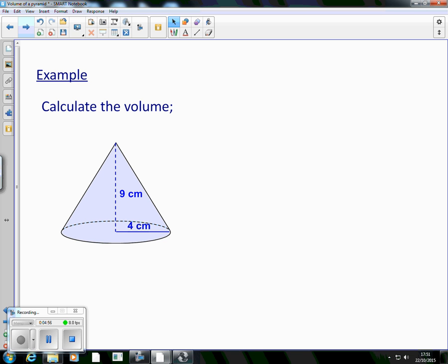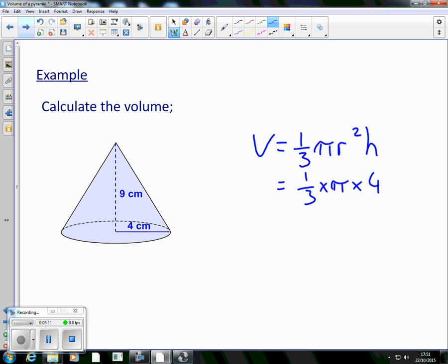So we'll look at an example. Calculate the volume of this cone. We go to our formula sheet, we make sure our formula is right. A third pi r squared h. Well, in this case, that's a third multiplied by pi, multiplied by 4 is the radius here. Be careful, make sure you're not given the diameter. You know how to deal with that. It's a third multiplied by pi, multiplied by 4 squared, multiplied by 9.